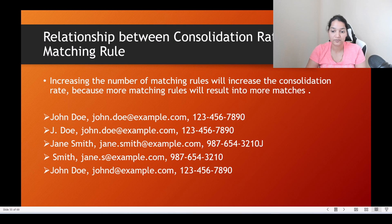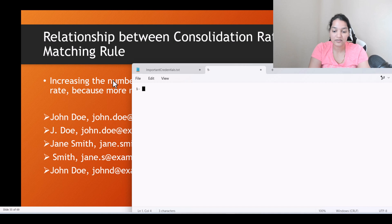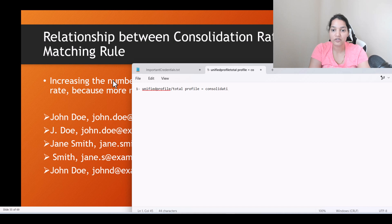Let me give you an example. The formula is 1 minus (unified profiles divided by total profiles) — that is the formula for consolidation rate. Now, will increasing the unified profile increase the consolidation rate or decrease the consolidation rate?